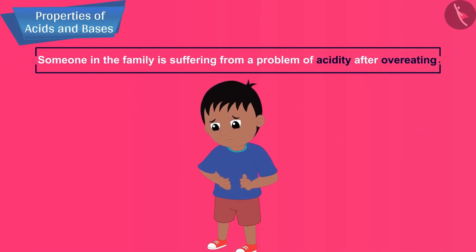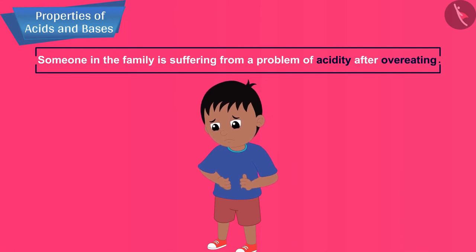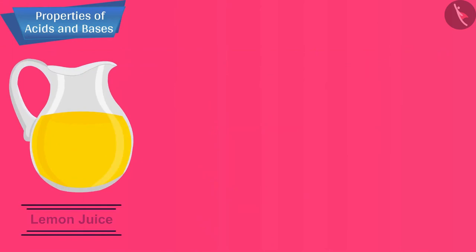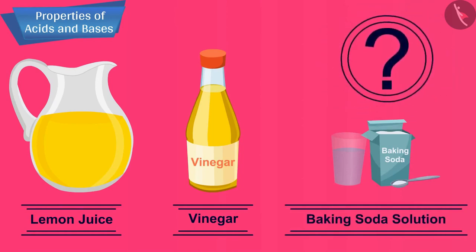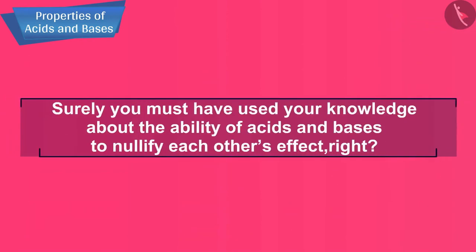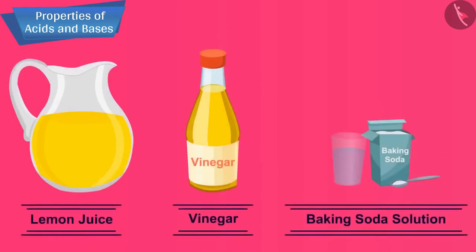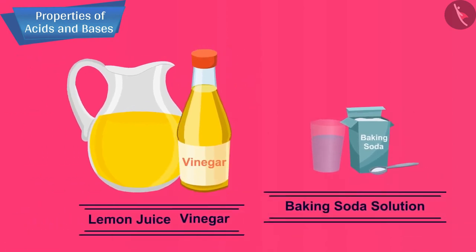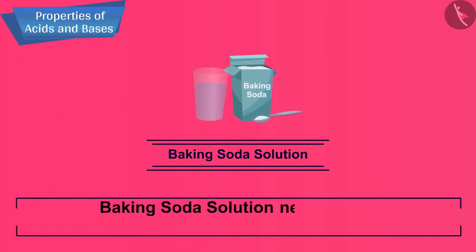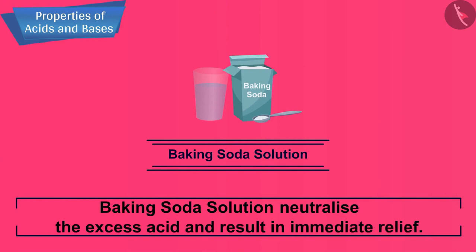If someone in the family is suffering from a problem of acidity after overeating, which of the following would you suggest as a remedy: lemon juice, vinegar, or baking soda solution? Which property did you think of while choosing the remedy? Surely you must have used your knowledge about the ability of acids and bases to nullify each other's effect. So when someone is suffering from acidity, the remedy you can give is baking soda solution, as this will neutralize the excess acid and result in immediate relief.